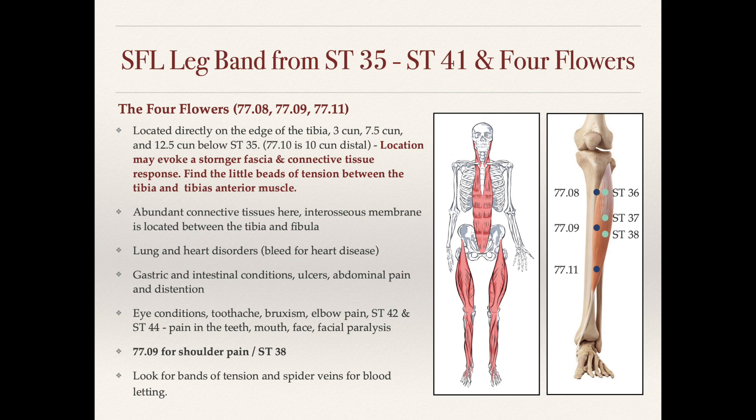These points are also indicated for eye conditions, toothaches, bruxism, elbow pain, and 77.09 is also used for shoulder pain. In the traditional points, we use stomach 38 for shoulder pain, and it works best for lateral and anterior shoulder pain. The point 77.09 is located on the same horizontal line — stomach 38 is 8 sun below stomach 35 and then 1 sun lateral to the edge of the tibia, while 77.09 is traditionally located 7.5 sun below stomach 35 and on the edge of the tibia.